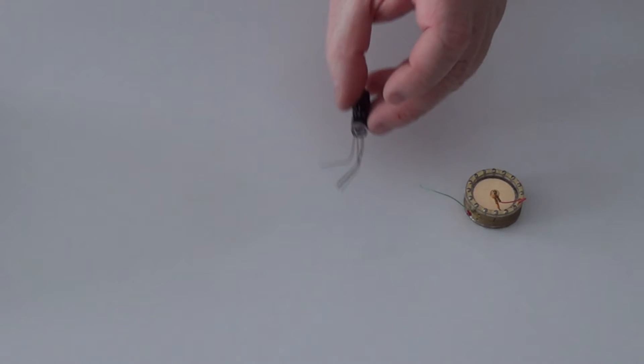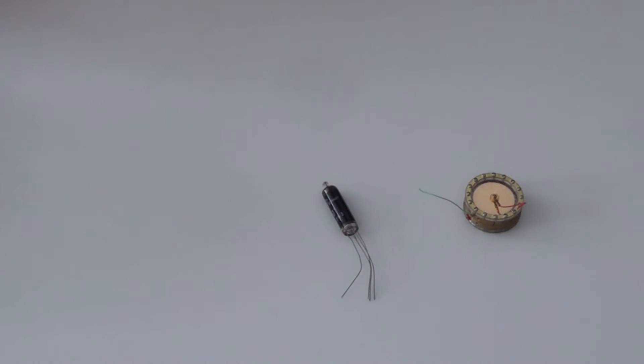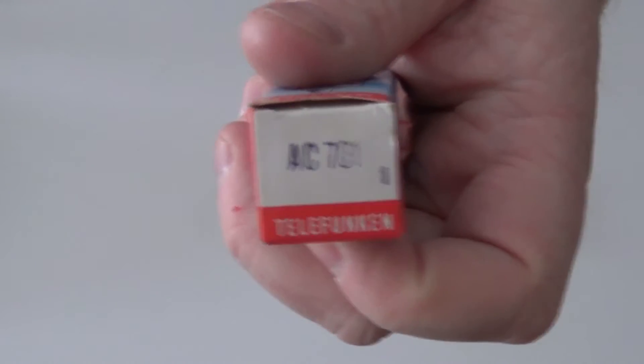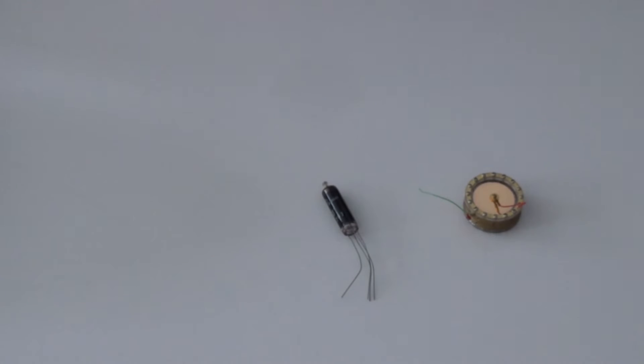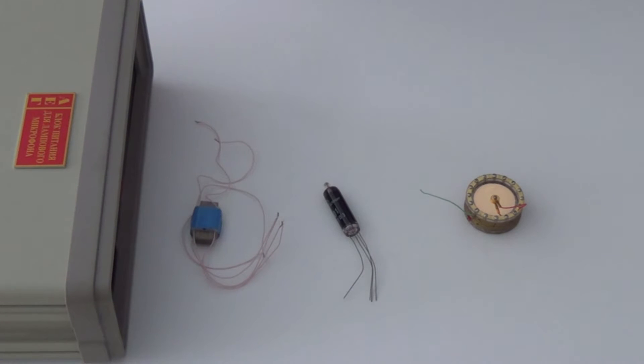So the next step is the tube. Here for the demonstration, we have a Telefunken AC701, also a legendary tube mic tube. The next step is a quality transformer. This is an old AKG transformer that's been rewound. And the fourth aspect is the power supply. Power supply provides the correct voltages to the microphone.